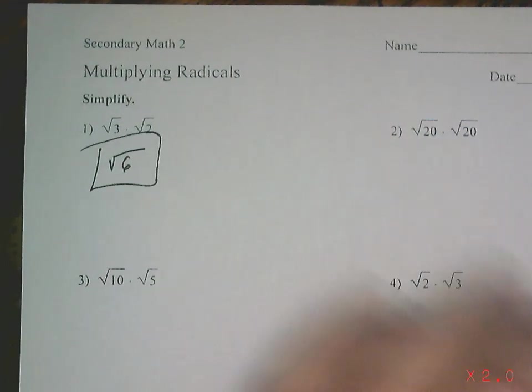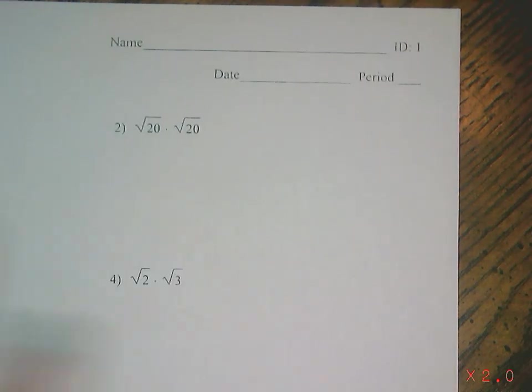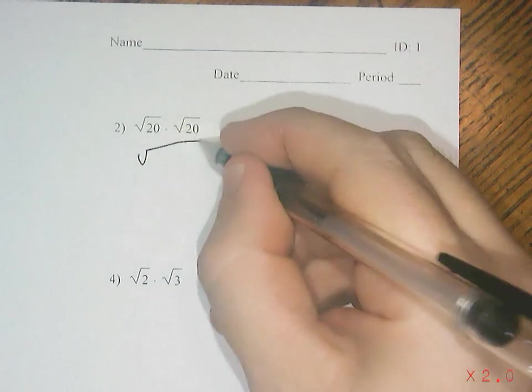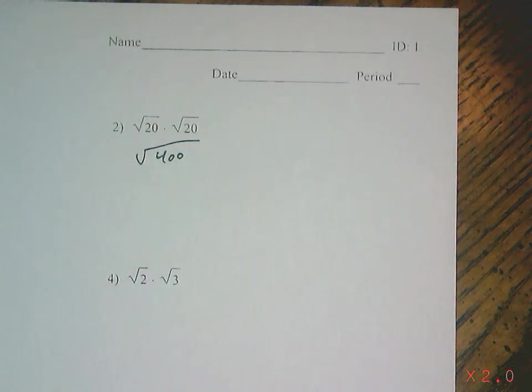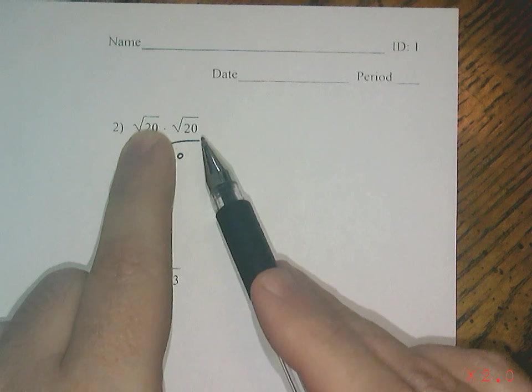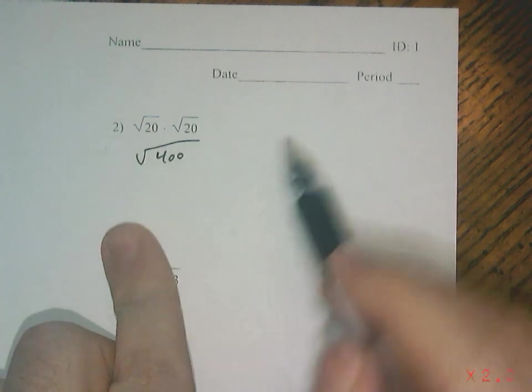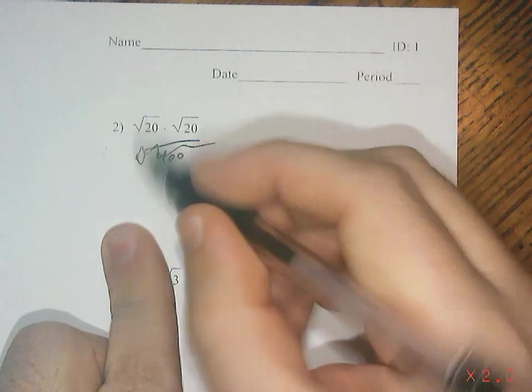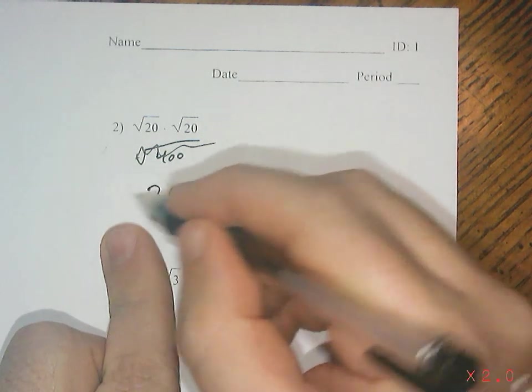Number 2, this one is so easy. I've got 20 times 20, right? 20 times 20 is going to be 400, so square root of 400. Does 400 have a square root? It sure does, it's 20. Which should be pretty obvious - if you take any number and multiply it by itself, even as a root, you're just canceling out the root. So the answer is just 20.